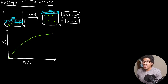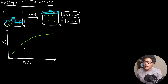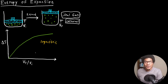If we look at the plot of entropy change as a function of the ratio of the final volume to the initial volume, we see that as the volume expands, the entropy change increases in a logarithmic fashion. So we end up with a logarithmic dependence of ΔS on this ratio of the final and initial volume.